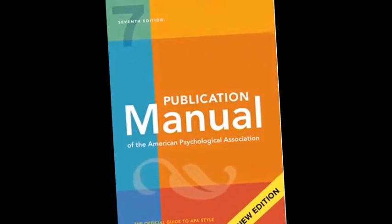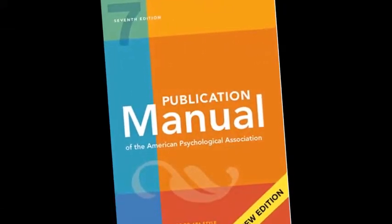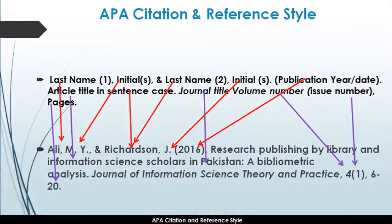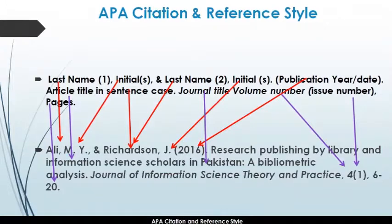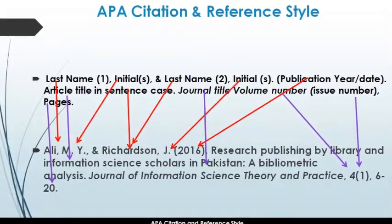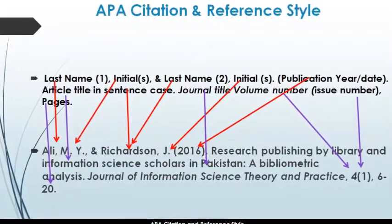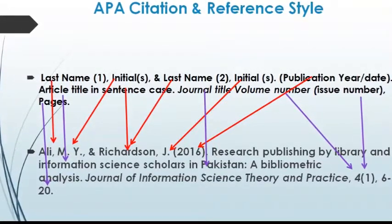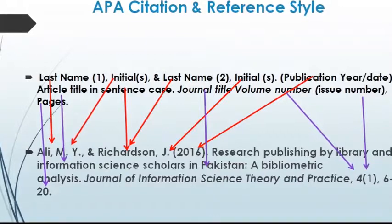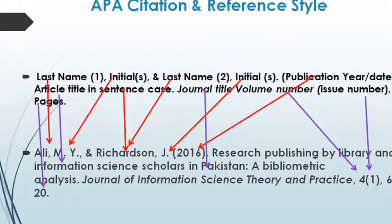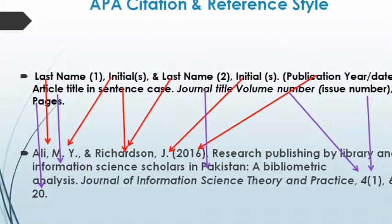Then we write the full title of the article — for example, 'Research publishing by library and information science scholars in Pakistan: A bibliometric analysis' — followed by a full stop. The journal name is written in italic font along with the volume number, and the issue number is written in normal font, followed by the page range.